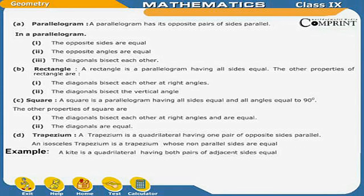Rectangle. A rectangle is a parallelogram having all angles equal to 90 degrees. The other properties of a rectangle are: the diagonals bisect each other at right angles, and the diagonals bisect the vertical angle.